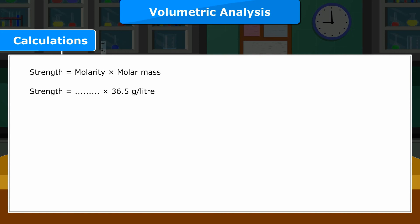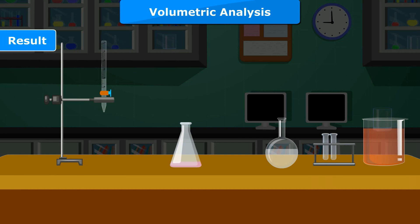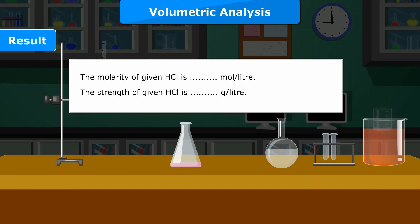Result: The molarity of given HCl is __ mol per litre. The strength of given HCl is __ gram per litre.